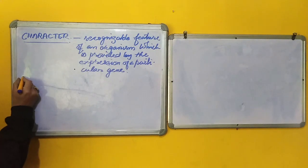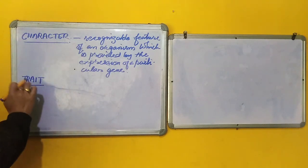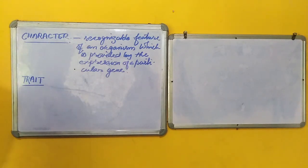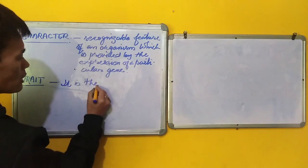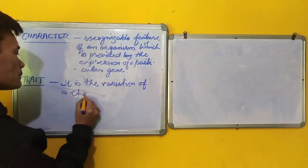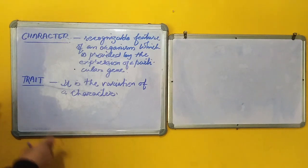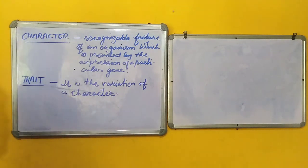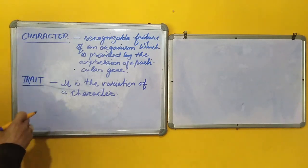Next, we come to the trait. A trait. Though the two terms character and trait are used interchangeably, there is a slight difference between the two. A trait is the variation of a character. To give you a better understanding of the trait and character, I have explained these two terminologies in my next video. So, please get into the video and please try to understand the difference between the character and trait.